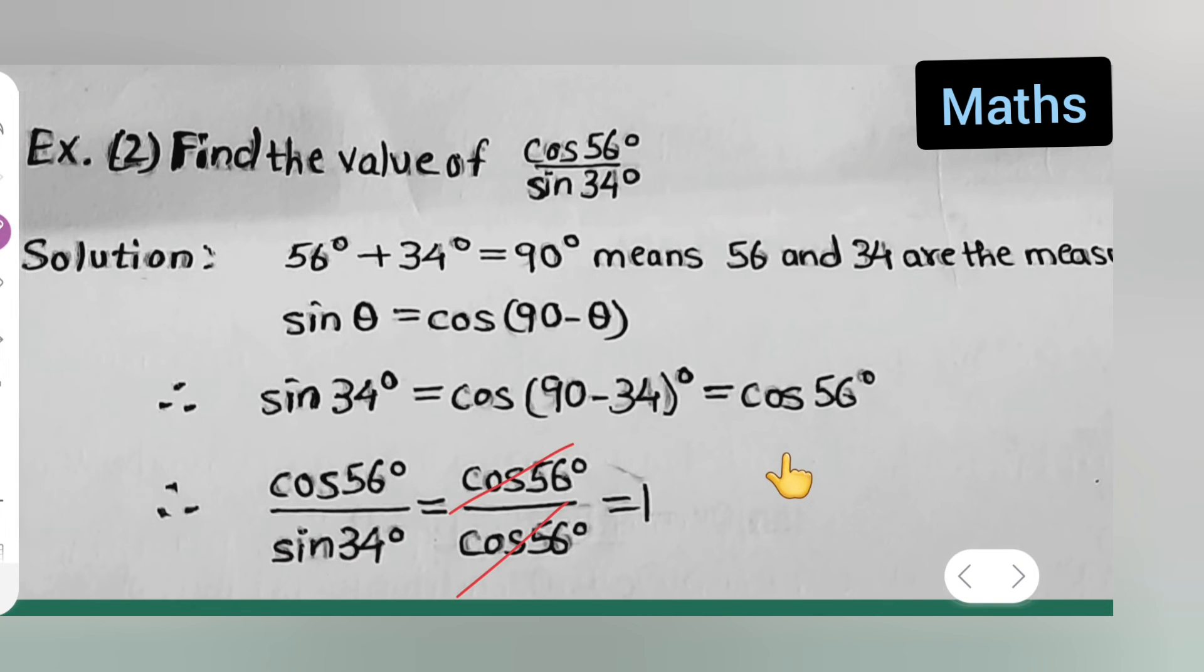Now these two terms are going to get cancelled. What is going to remain is 1. So cos of 56 degree upon sin of 34 degree is equal to 1. So I hope you all have understood today's example which is taken from trigonometry class 9th. Thanks for watching.